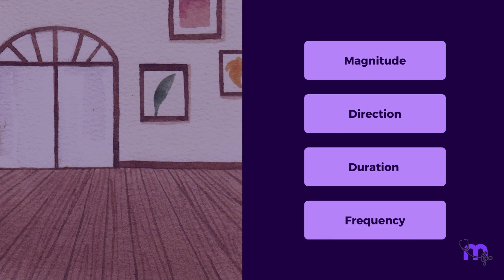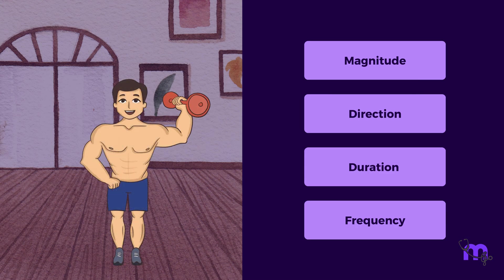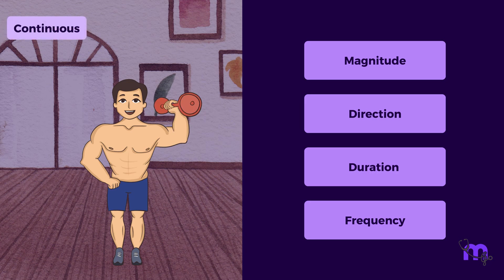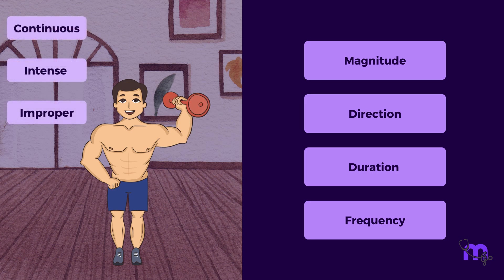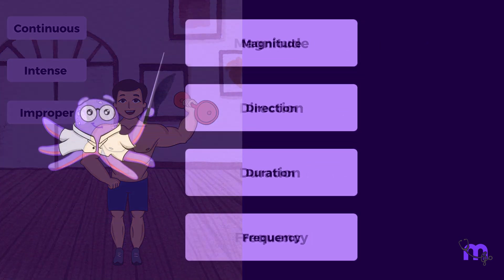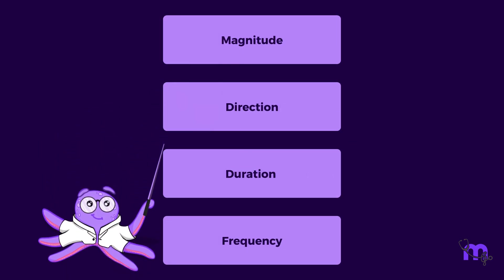These factors can be compared to Joe's case, where the problem was more than just over-exercising. It was also due to continuous, intense, and improper workouts, which increased the injury. Let's get into the details of each of them.